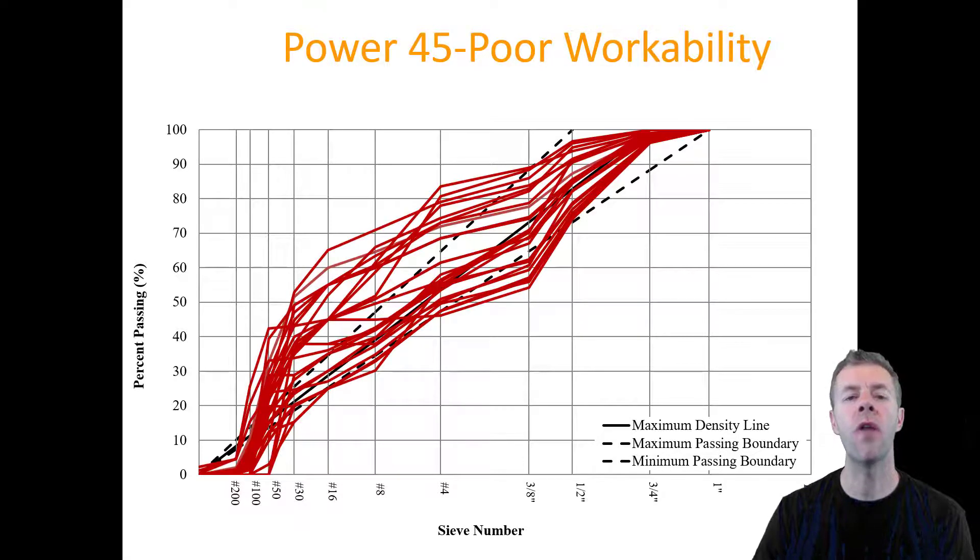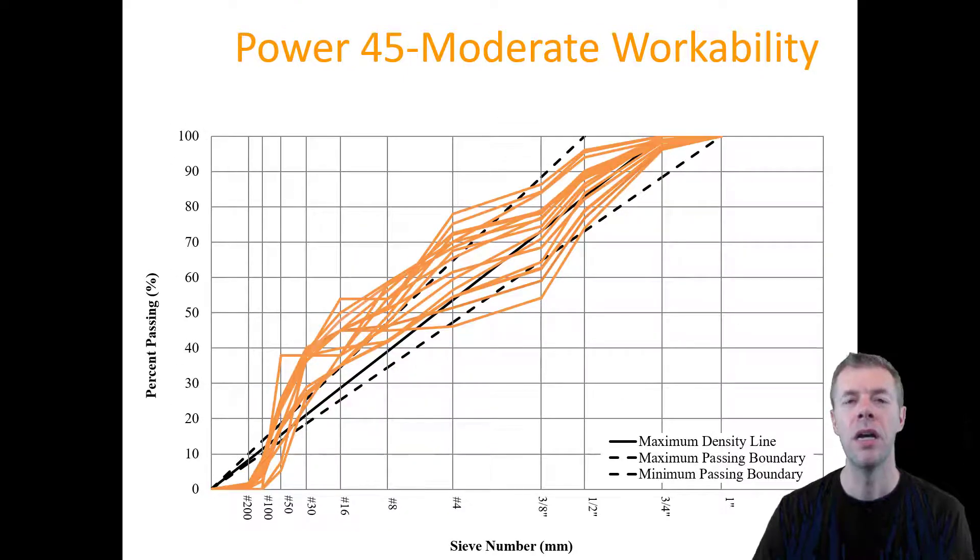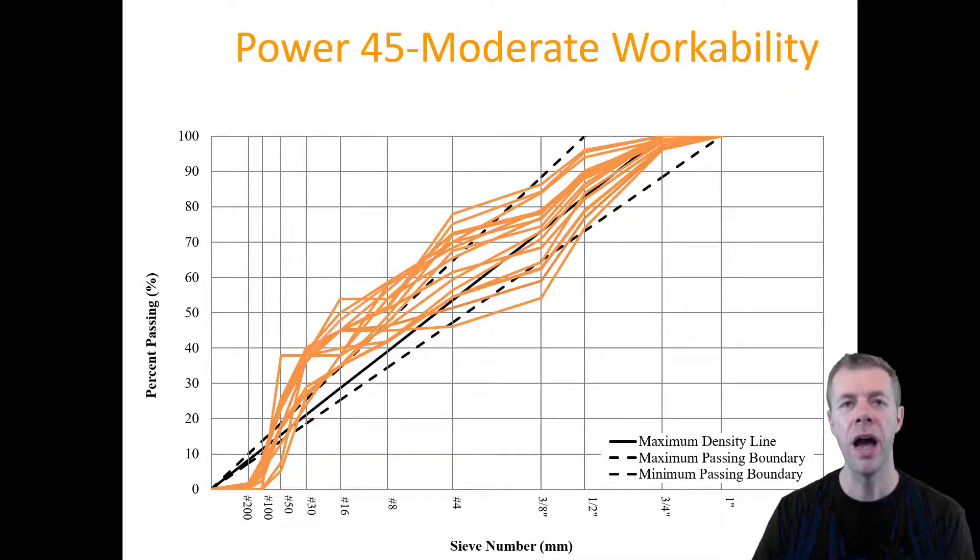For example, I plot on this chart a bunch of different concrete mixtures that we've looked at, that all of them have, that we've used a lot of different workability tests to determine that they have poor workability. And look, the data is just all over the place. And these were all determined or deemed to have moderate workability. And then these were all determined to have good workability.